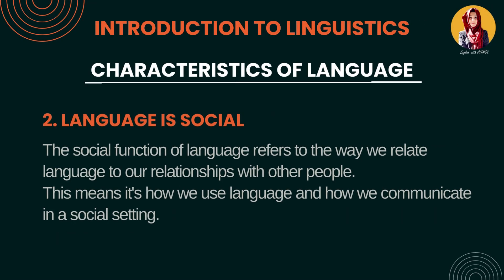Number 2: Language is social. Language jo hai society mein boli jaati hai. Yeh social kis tarah se hai? Kyunki language hum isliye use karte hain for the purpose of communication — for sharing our ideas, emotions, thoughts. Hum log aapas mein baat-cheet karne ke liye language use karte hain. That's why language is social, aur hum log language ko use karte hue different functions perform karte hain aur different relationships build karte hain.